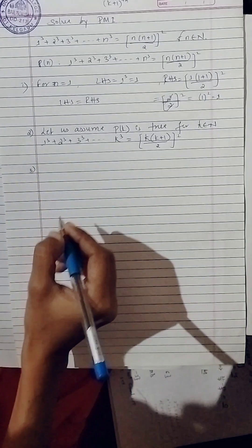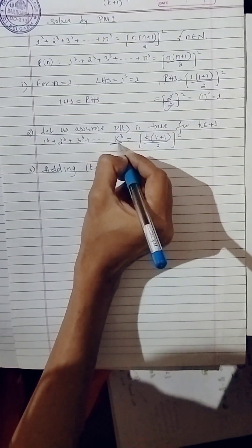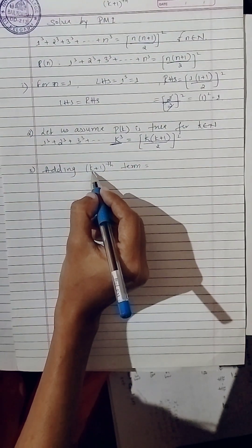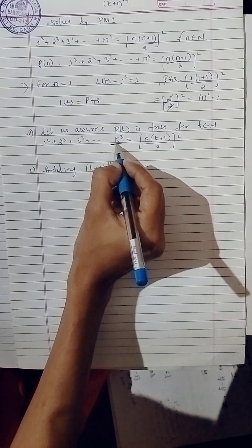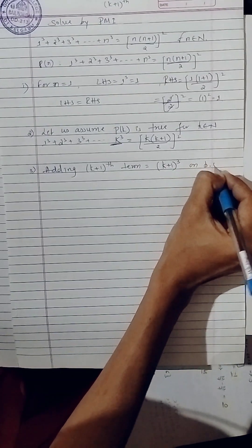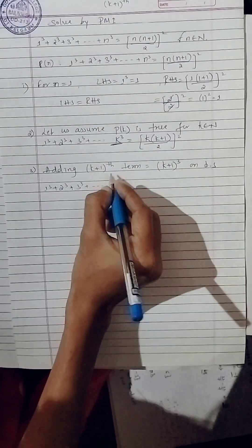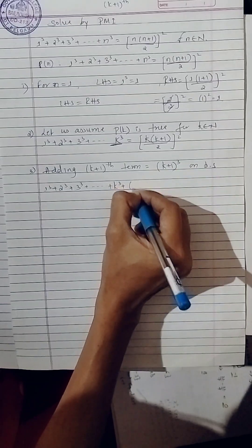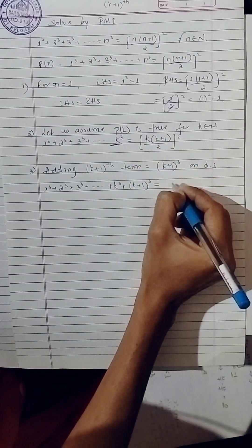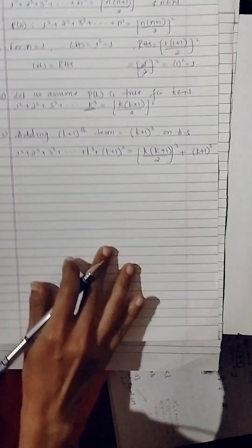Third and most important step: we are adding the k plus one term. The term we consider depends on the RHS — the last term is k cube, so replace k by k plus one, giving k plus one cube. We add k plus one cube to both sides. LHS becomes one cube plus two cube plus three cube up to k cube plus k plus one cube, which equals RHS: k into k plus one divided by two, bracket square, plus k plus one cube.